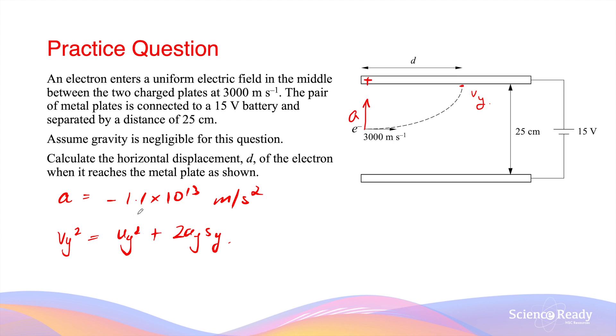Uy will be the vertical component of the initial velocity. In this case, this will be 0 squared as the electron is traveling horizontally at the beginning.